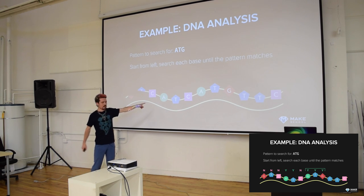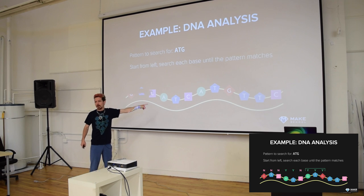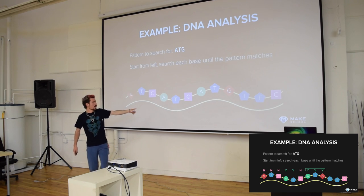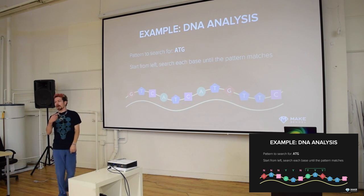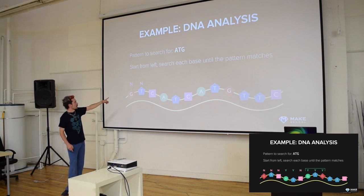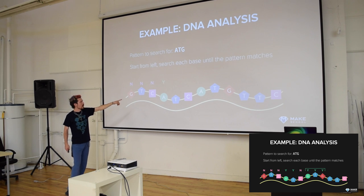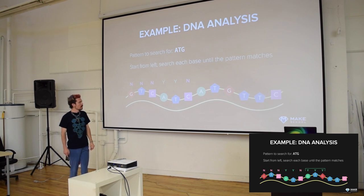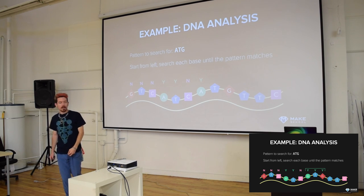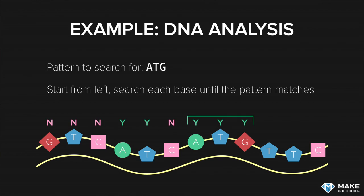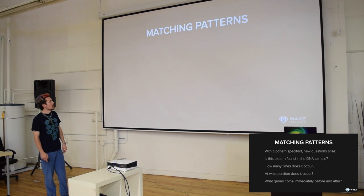In this case, we find the first A, confirm it's followed by T, then check for G - it's not, so we keep going to find the next A. We scan through: not an A, not an A, not an A - yes, here's one. The T matches the second letter, the G matches - great, we found the pattern ATG in the sequence.